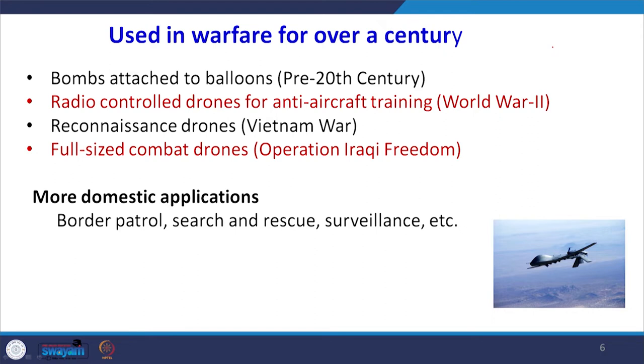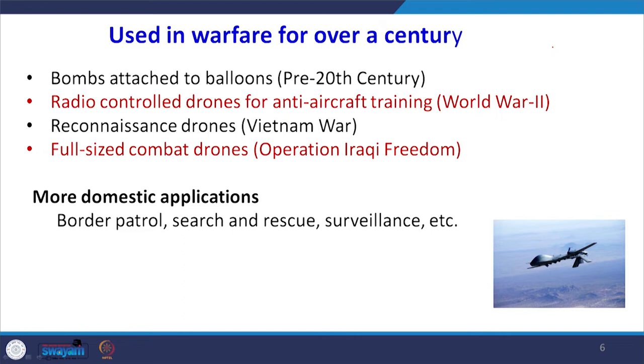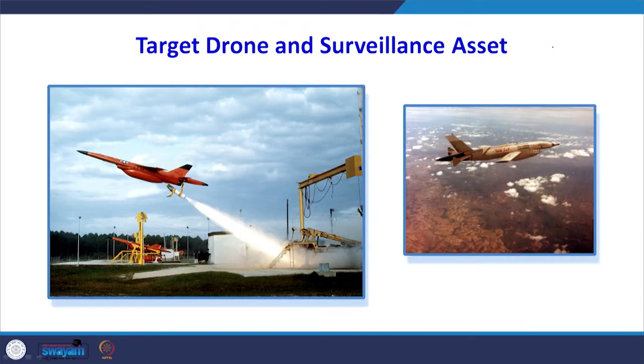In World War 2, radio-controlled drones were used for anti-aircraft training. In the Vietnam War, reconnaissance drones came which would fly to an area and collect basic data useful for planning. Then we had full-size combat drones, and further applications like border patrolling, continuous surveillance, and search and rescue operations. These are operations in warfare and military contexts where drones have been used for a long time.